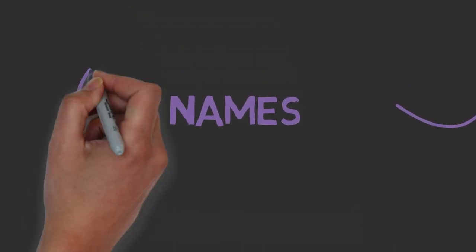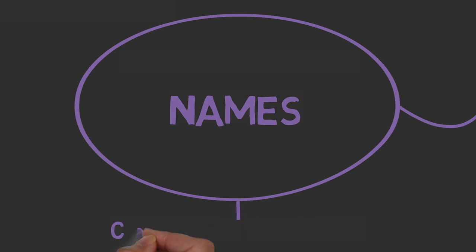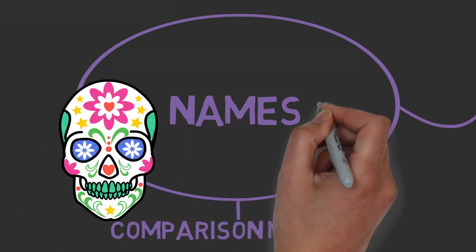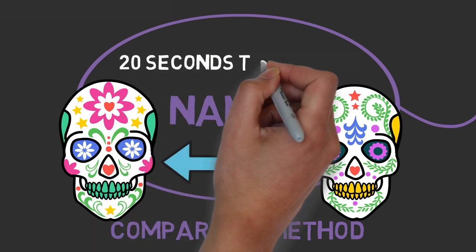Next is memorizing names. First, the comparison method. Think of somebody with the same name as the person you met, and compare facial features. Connect them in your mind.